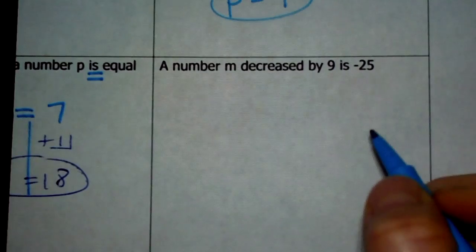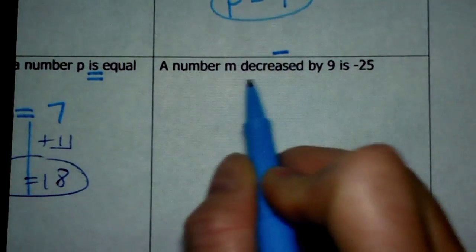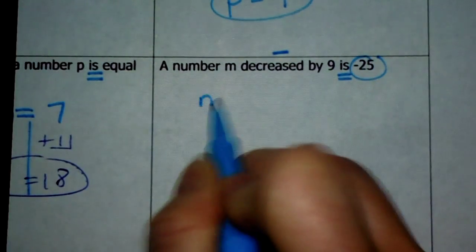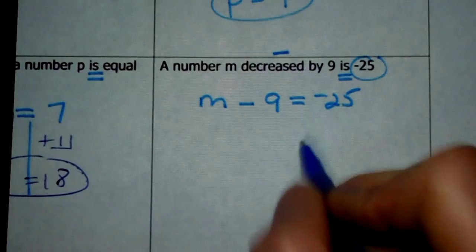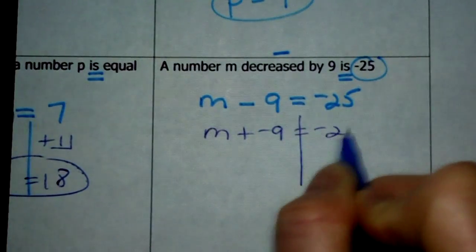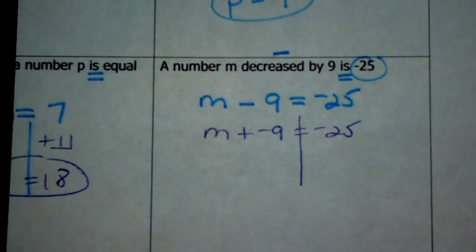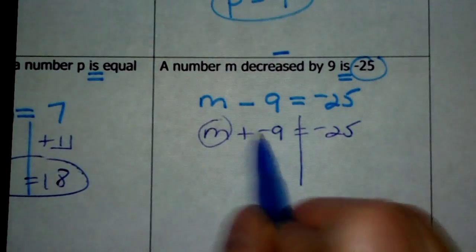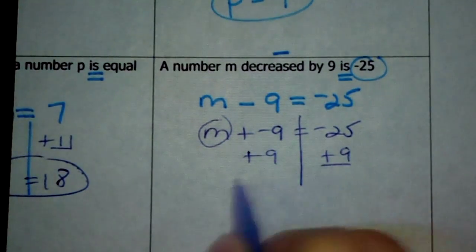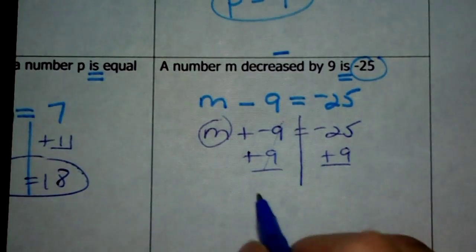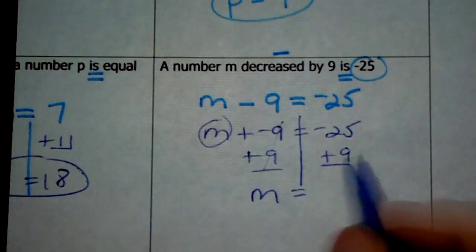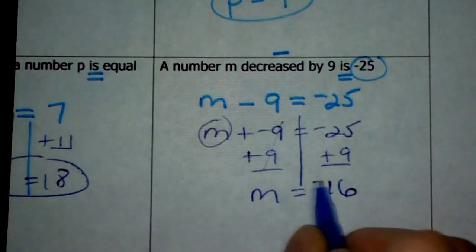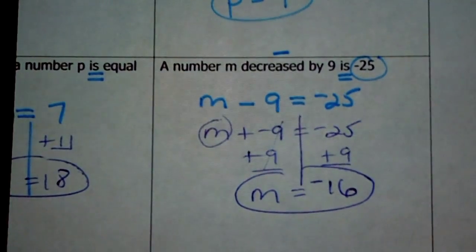Finally: a number m decreased by 9 is negative 25. Decreased is a key word for subtraction. So m minus 9 equals negative 25. Draw my line and change my sign: m plus negative 9 equals negative 25. Here's m — cancel out the negative 9 by adding a positive 9 to both sides. When you have a positive and a negative, subtract the digits and take the sign of the greater: 25 minus 9 is 16, and I have more negatives than positives, so m equals negative 16. See you tomorrow.